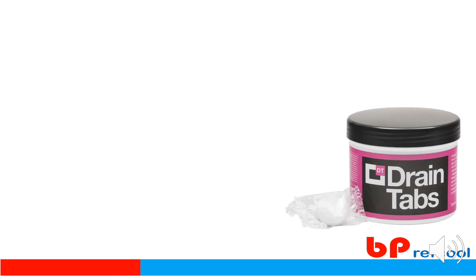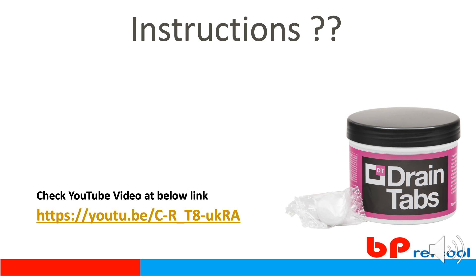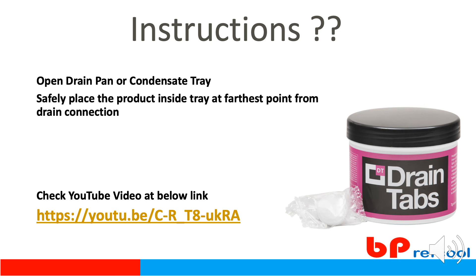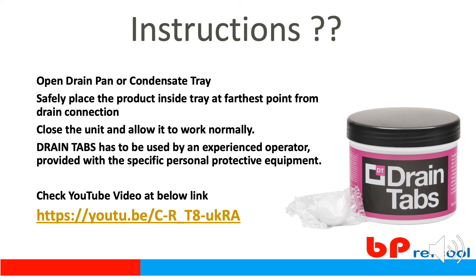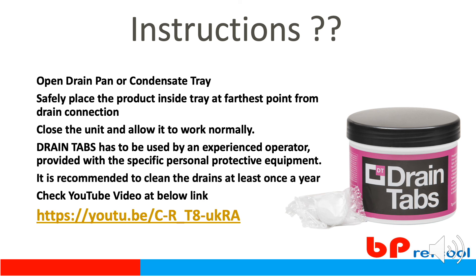We have a video on our YouTube channel showing how to install the drain tab in an air conditioning system. It is very simple — you need to get access to the drain pan by opening the indoor unit until you can see the drain pan. After opening the pouch, you can safely place the drain tab at the farthest point from the drain outlet, so that it covers the complete drain path. Close the unit and allow it to work normally. Accessing the drain pan is not easy for a regular consumer, so an experienced operator or technician is recommended. It is also recommended to clean your drains at least once a year for a longer life.